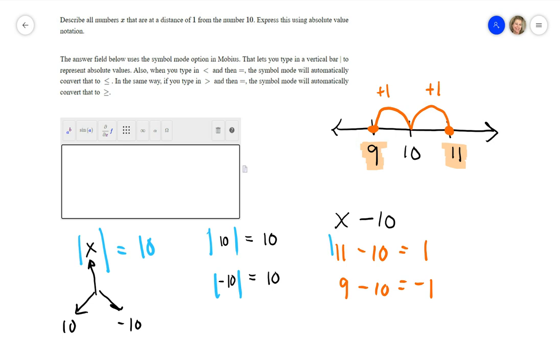However, if you were to put absolute values around this, they both end up being positive 1. Okay? So, you just put your absolute values around the x minus 10.